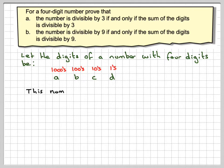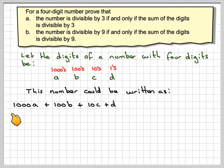So this number can now be written as A times 1,000, so 1,000A, plus 100B, plus 10C, plus D. If you add all these up, you'll get back to the number that we want.